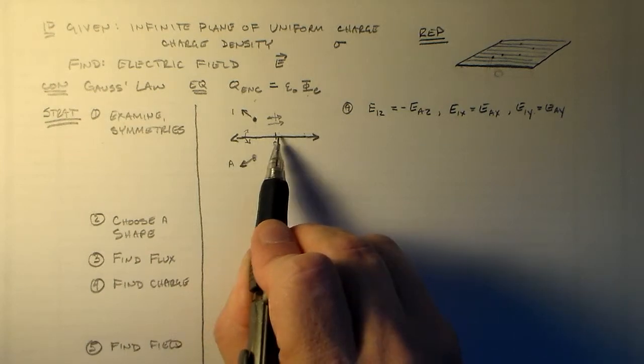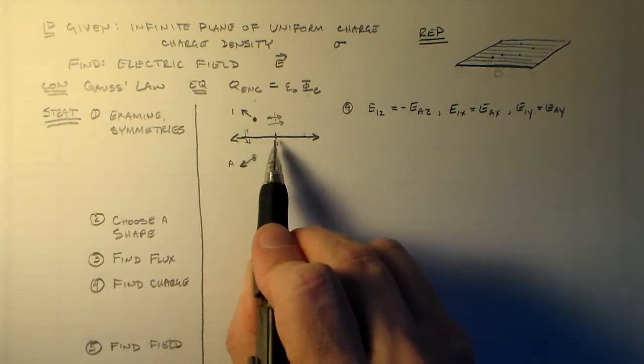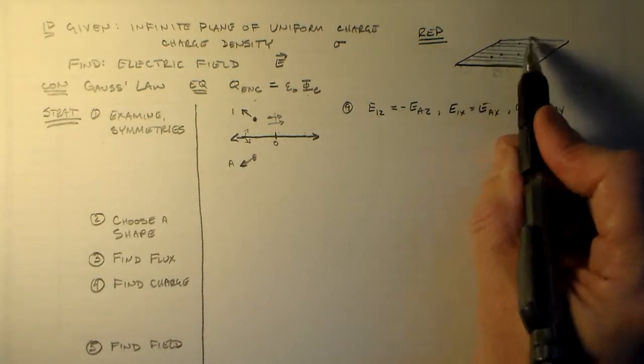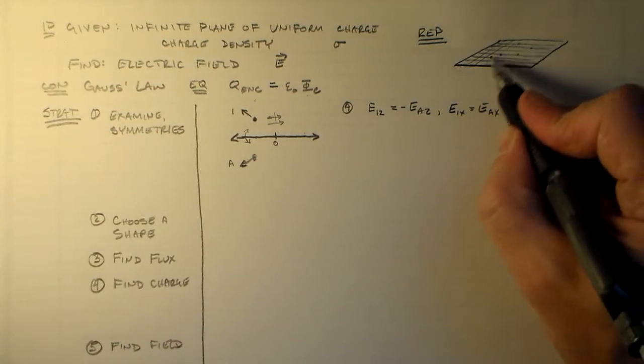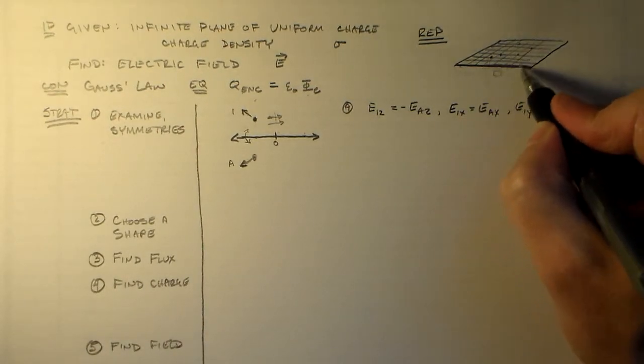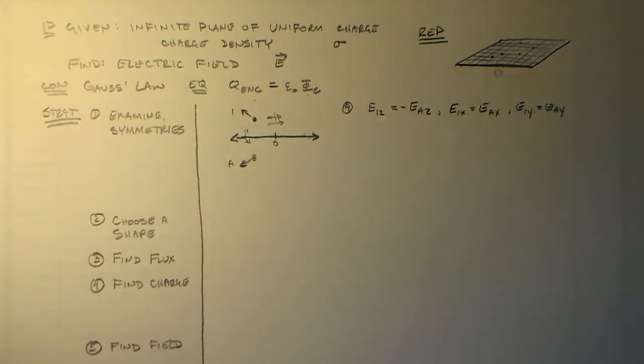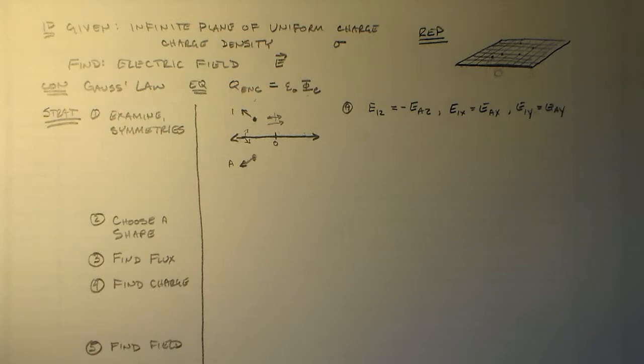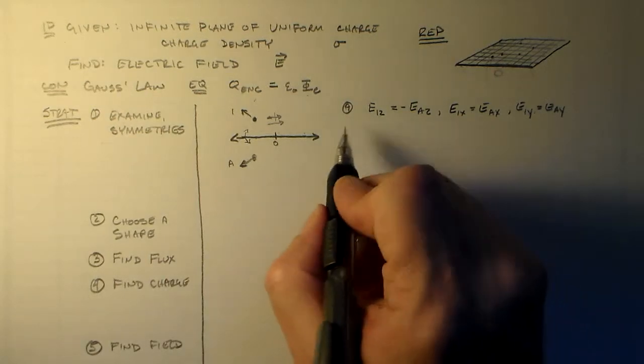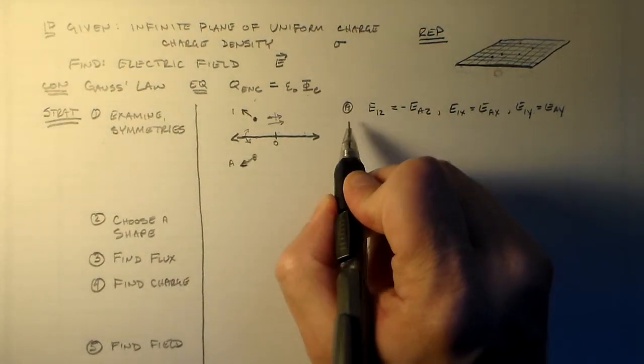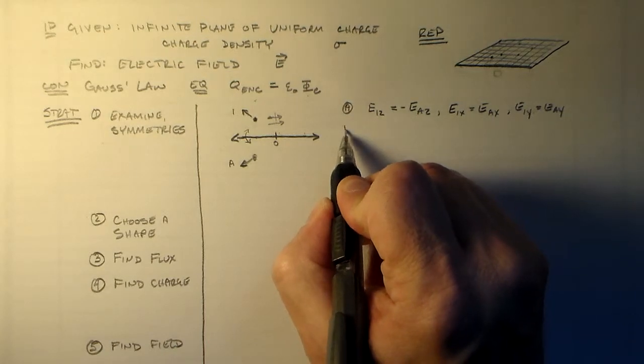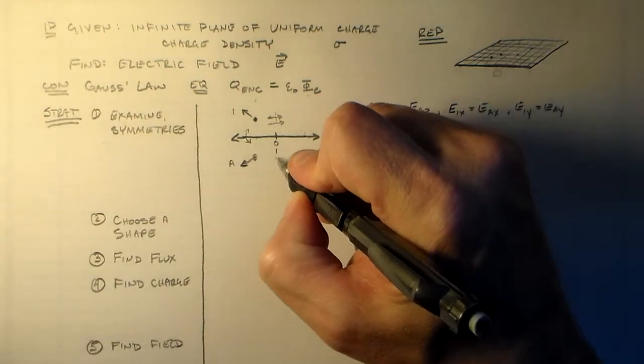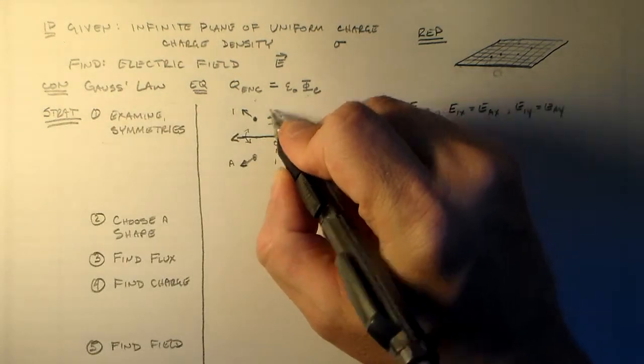So E1z is equal to minus Eaz, and these other ones are exactly the same. So that's what happens here. Really, we only see the x direction, but whatever we say for the x direction, because this is the same in all orientations, we have to be able to say for the y direction. So that's actually using the rotational symmetry by being able to say whatever is true for x is true for y as well. So that's really the example. But the ones we're going to use here are going to be this reflection symmetry here.